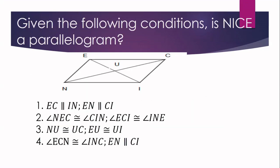Now let us apply the conditions we have discussed. Given the following conditions, let us determine if quadrilateral NICE is a parallelogram. Statement one: EC is parallel to IN, and EN is parallel to CI. Yes, we can say that NICE is a parallelogram, because that is already the definition of a parallelogram — the two opposite sides are parallel.